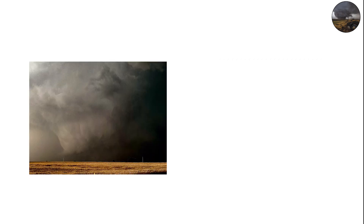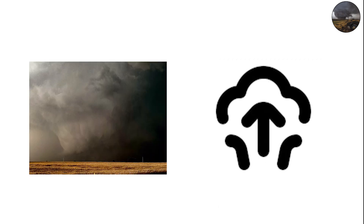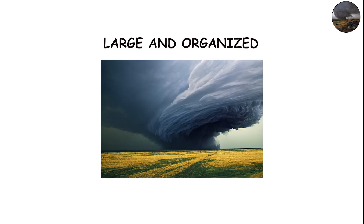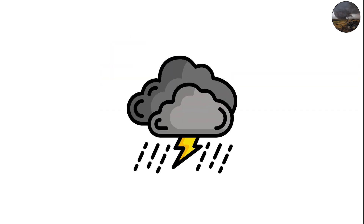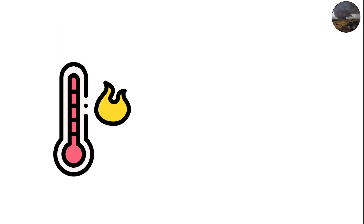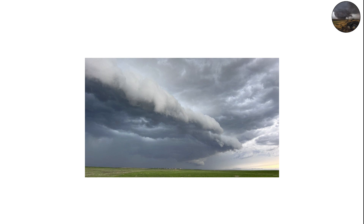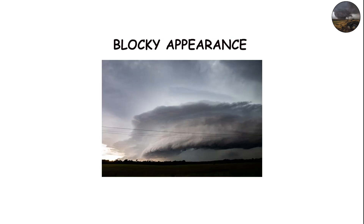Wedge tornadoes form when the rotating updraft, known as the mesocyclone, becomes extremely large and organized. The storm's inflow is powerful and consistent, feeding huge amounts of warm, moist air into the vortex. This causes the condensation funnel to expand horizontally, creating a wide, blocky appearance.